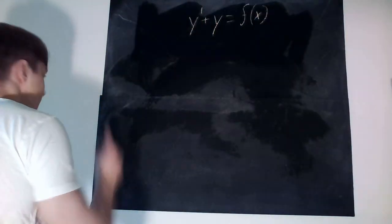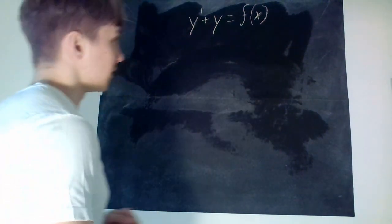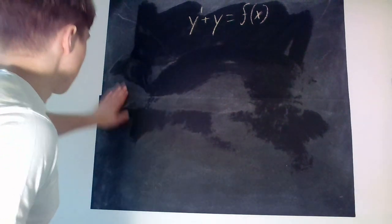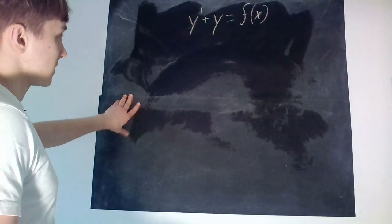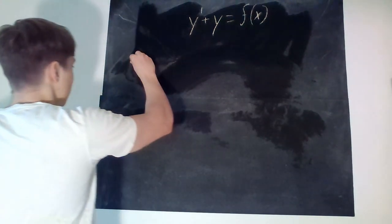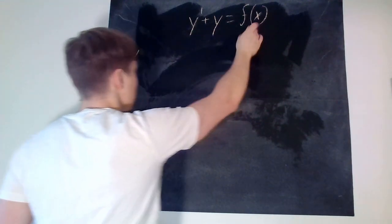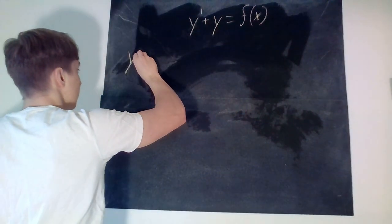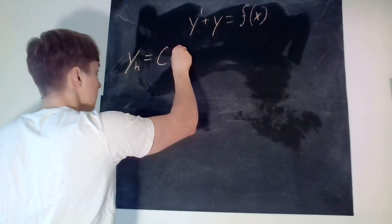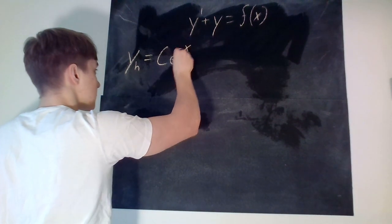We're supposed to solve this differential equation for three different kinds of functions for f. Before we look at any of the cases, let's just state the homogeneous solution for y. So that means that if f of x was equal to zero, the solution would obviously be some constant times e to the power of minus x.